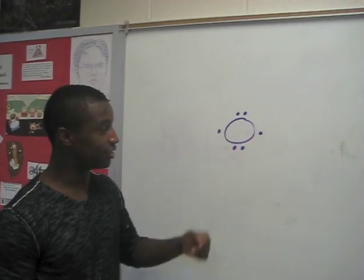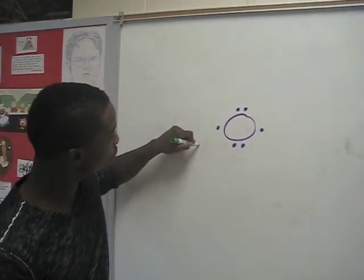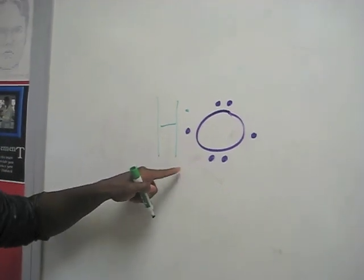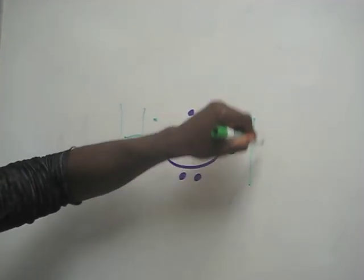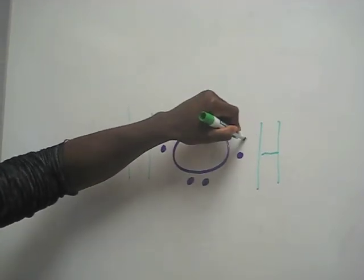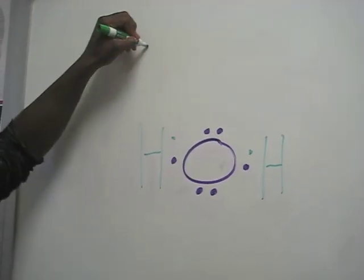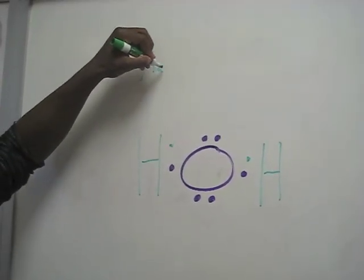Oxygen has six valence electrons. Hydrogen has one. When they bond they make seven. So they need another hydrogen to make eight. That's why it's called H2O.